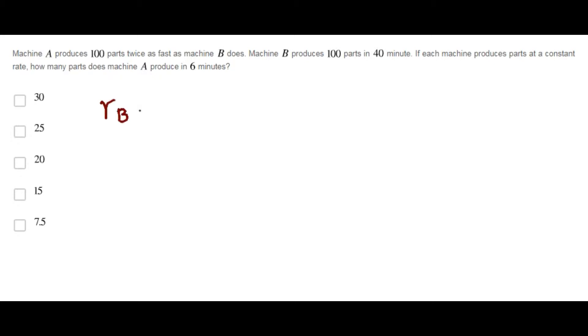So, first of all, the rate of machine B is 100 parts every 40 minutes.